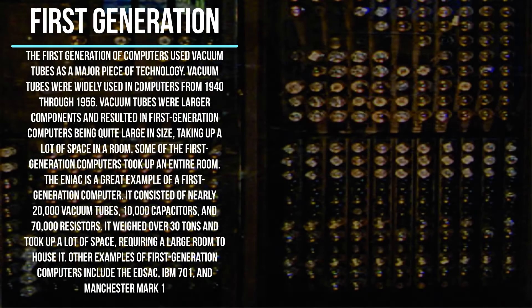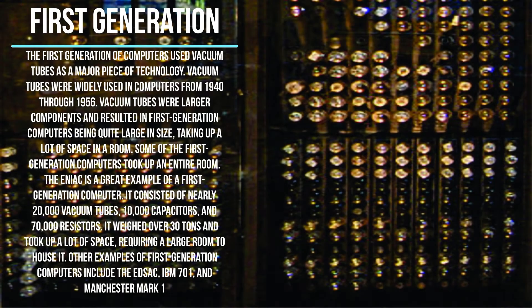The ENIAC is a great example of a first generation computer. It consisted of nearly 20,000 vacuum tubes, 10,000 capacitors, and 70,000 resistors. It weighed over 30 tons and took up a lot of space, requiring a large room to house it.